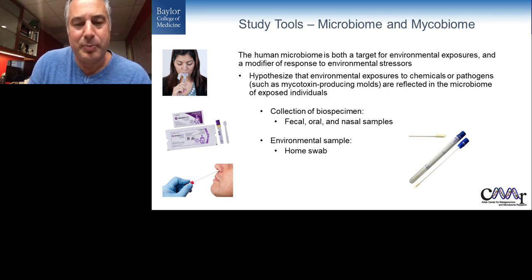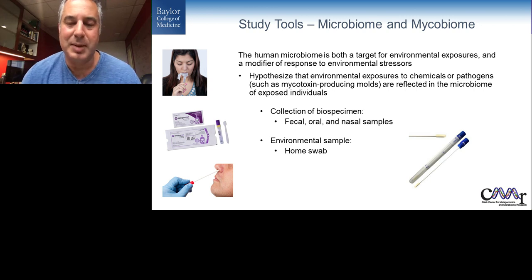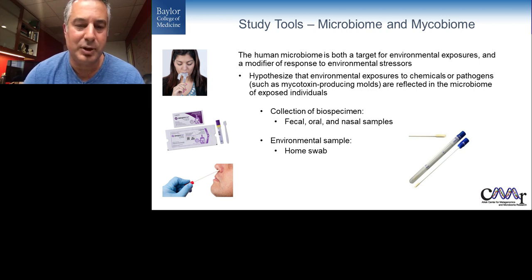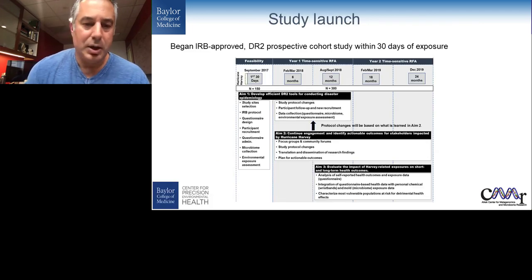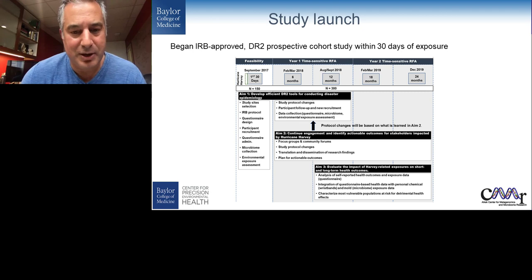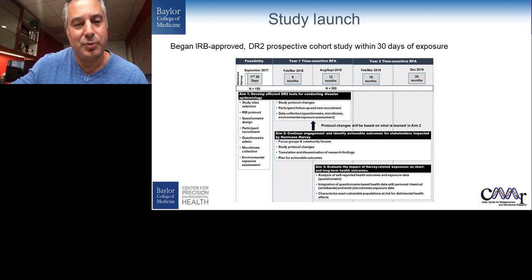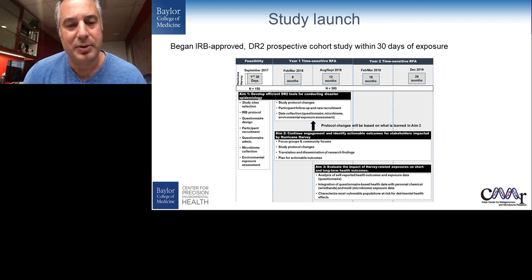We developed a questionnaire to capture general information from each study participant: socio-demographic data, exposure data, how much they participated in remediation activities, current health impact, environmental health information about the environment they're currently living in, and diet information as a baseline for the microbiome data. We used fecal collection kits, oral and nasal swabs, a saliva passive collection, and a home swab where people could sample specific areas of their homes. The idea was to launch the study within 30 days of Hurricane Harvey.